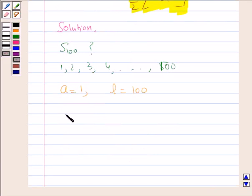So here S100 is equal to 100 by 2 into 1 plus 100, which is equal to 50 into 101, which is equal to 5050. So this is S100.